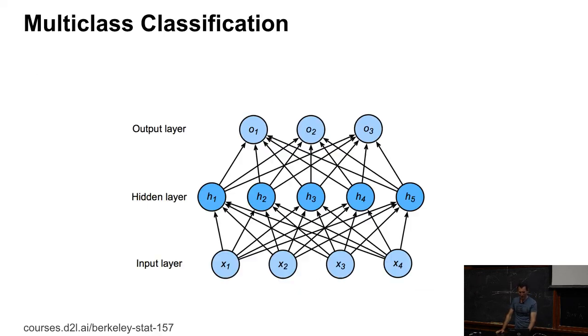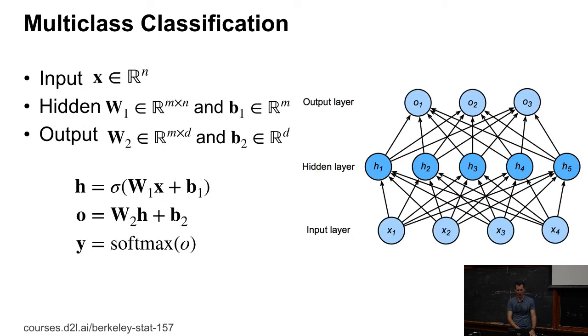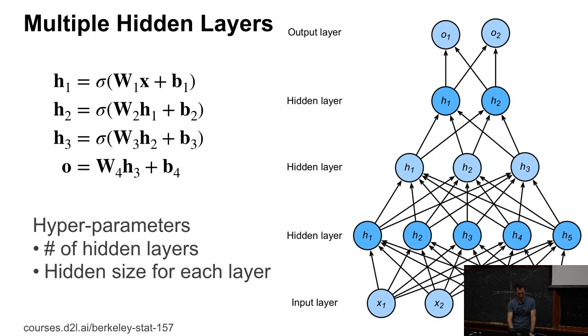So, these are all the activation functions. Now we can do multi-class classification. And the only thing we need to do for that is we have input layer, hidden layer, output layer, and then I run a softmax on top of that. In terms of math, we have hidden layer is sigma of W1 times X plus B. The output is W2 times H plus B. And then, Y is softmax of O.